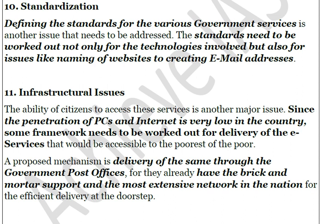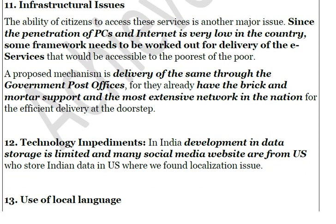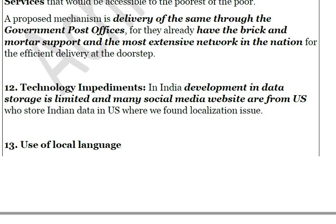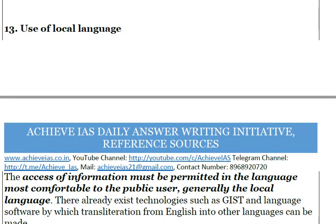The government has a project called e-DARPAN — Electronic Development of Rural Post offices for A New India — to leverage post offices for e-governance. There are also technology impediments: the database storage system in India is not strong enough, with much data stored abroad by social media platforms. Development of robust domestic data storage is needed to protect citizen data and ensure accurate identification of beneficiaries.